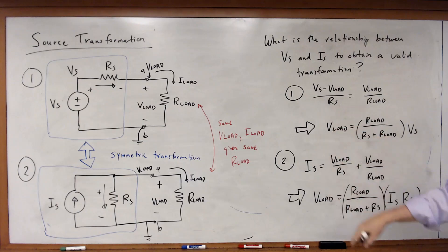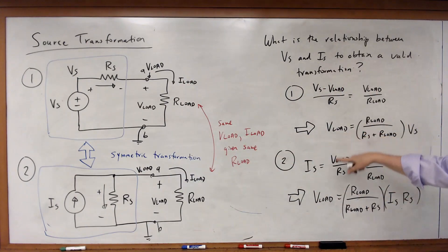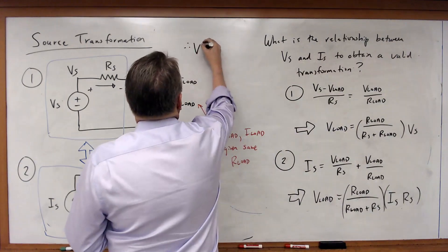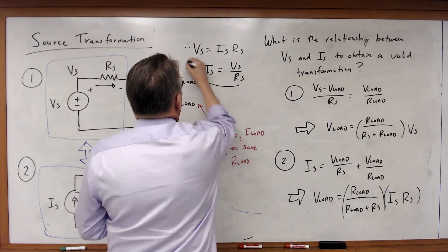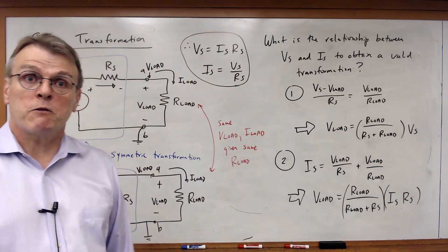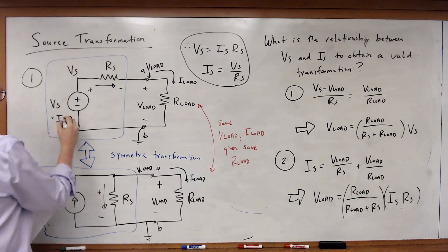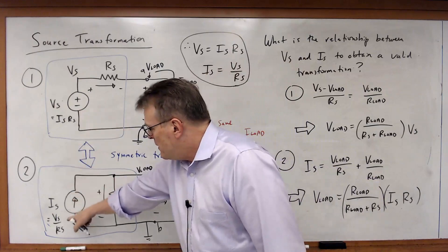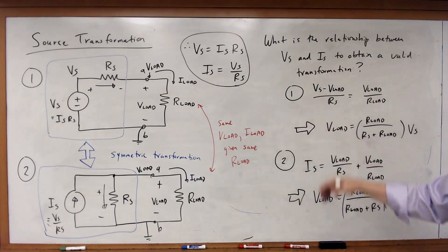V-load has to be the same between these two circuits — that's the whole point of this transformation. V-load must be the same given R-load, which means these two expressions are equal. The only way that can happen, since the R-load fractions are clearly the same, is if VS equals IS times RS, or IS equals VS over RS. These are the equations for source transformation, which are really just Ohm's Law.